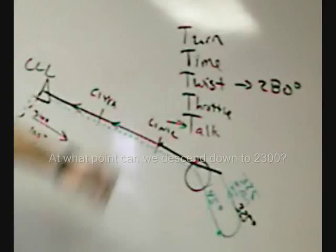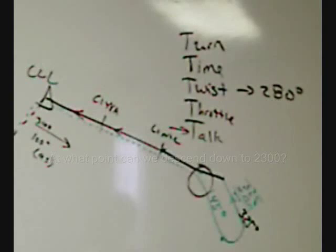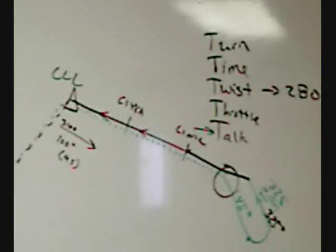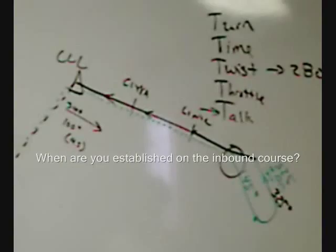At what point can we descend down to 2300? As soon as you start, this is established inbound. When are you established on the inbound point?